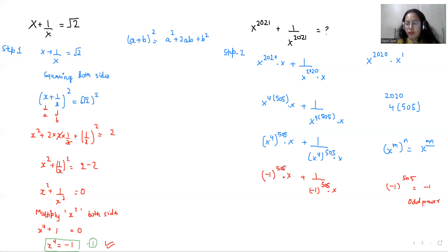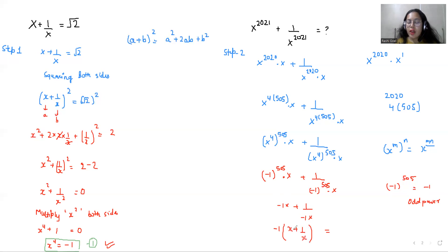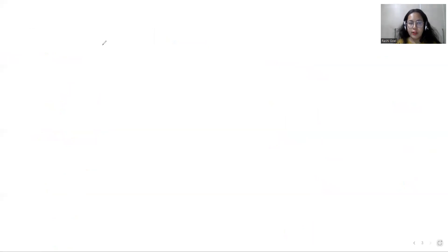In place of (-1)^505, we write -1. So the expression becomes -1·x + 1/((-1)·x), which is -x - 1/x. Taking -1 as common gives us -1·(x + 1/x). We know from the question that x + 1/x = √2, so substituting gives -1 · √2 = -√2. Therefore, the value of x^2021 + 1/x^2021 is -√2.